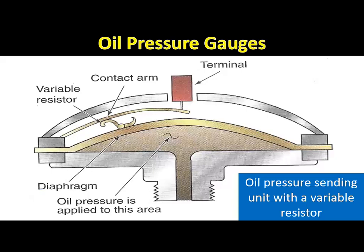The sending unit for an oil pressure gauge contains a diaphragm and a variable resistor. Engine oil pressure is supplied to the sending unit diaphragm. As oil pressure increases, the diaphragm moves upward and the contact arm slides along the resistor. An increase in oil pressure reduces sending unit resistance, and a decrease increases it. The change in resistance affects the voltage returned to the gauge in the same way that the fuel gauge system works.